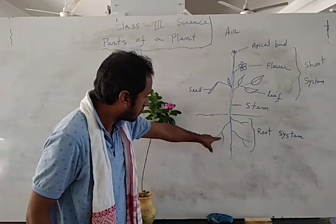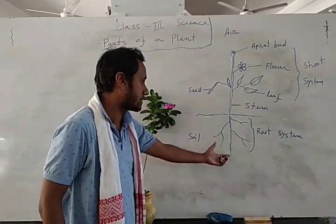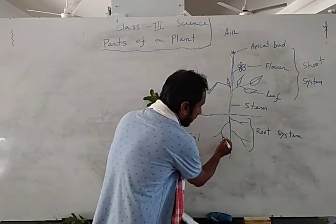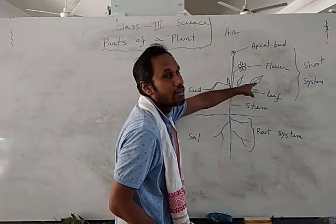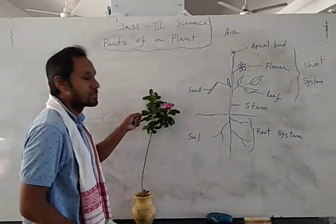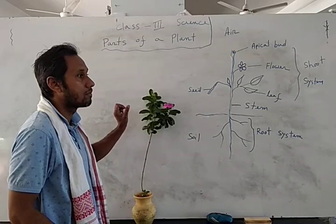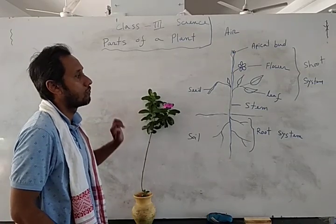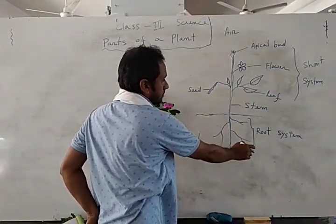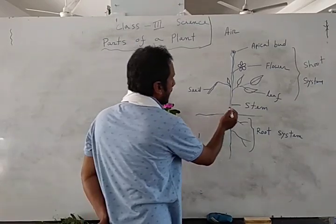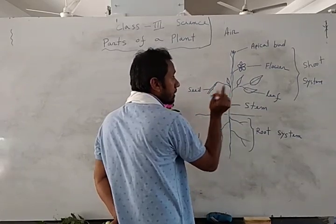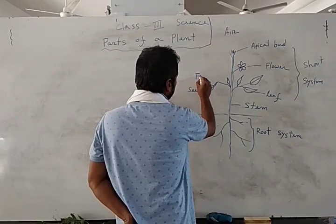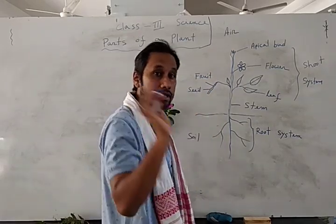When the root collects water and natural nutrients from the soil, it gives them to the stem. From the stem, water goes to the leaf. With the help of sunlight, the green leaves — which contain a pigment called chlorophyll — make food. That food goes to all parts of the plant, helping it produce flowers, fruits, and seeds. From the flower, a seed is developed, and inside the fruit a seed is present.